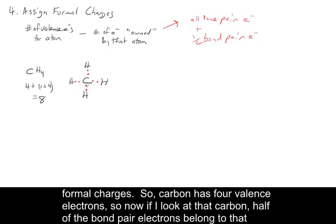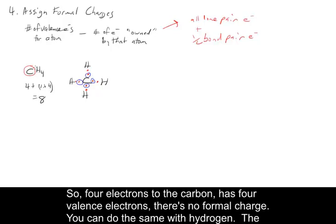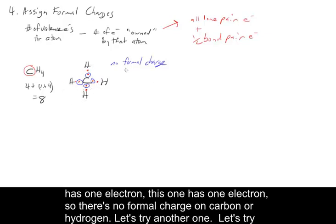Now look at formal charges. Carbon has four valence electrons. Half of the bond pair electrons belong to carbon — one from each bond — so there are four electrons that belong to carbon. It has four valence electrons, so there's no formal charge. The hydrogens each have one valence electron and one electron that belongs to each of them, so there's no formal charge on carbon or hydrogen in CH4.